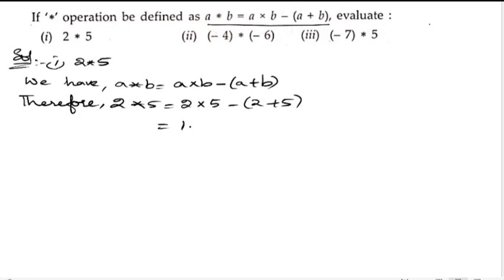2 into 5 is 10, minus (2 plus 5 is 7), so 10 minus 7 is 3. This was the first bit. Now let us do the second bit: minus 4 star minus 6.